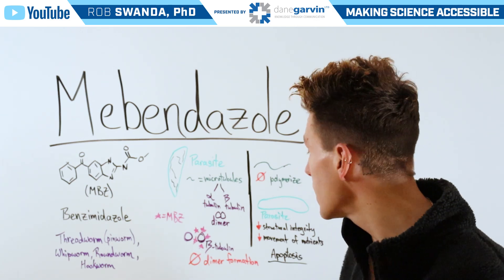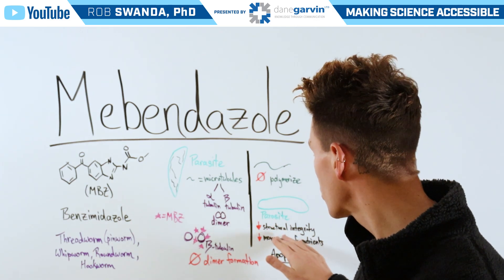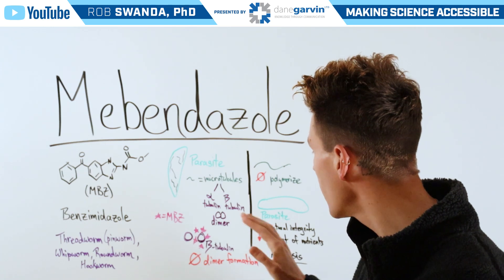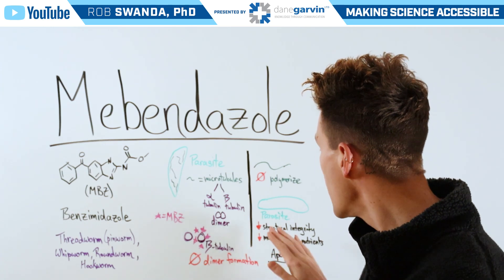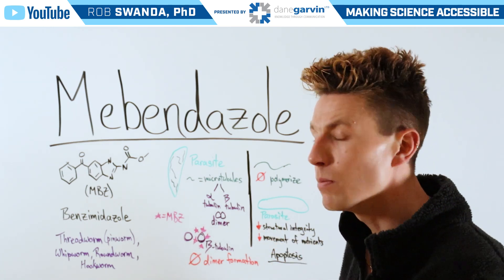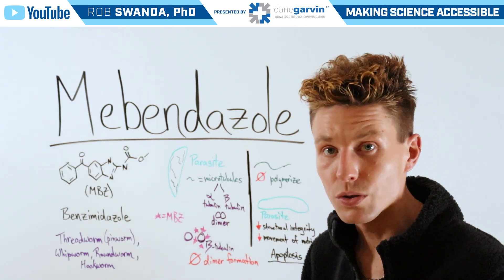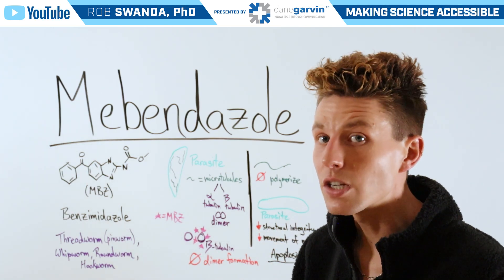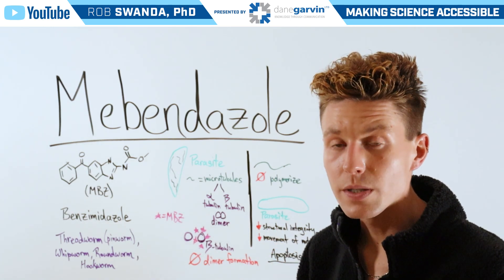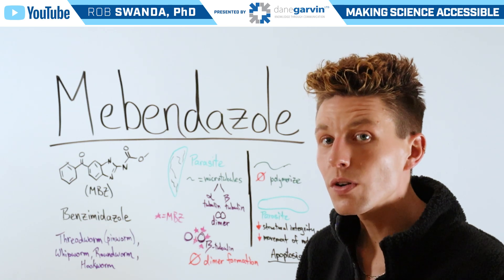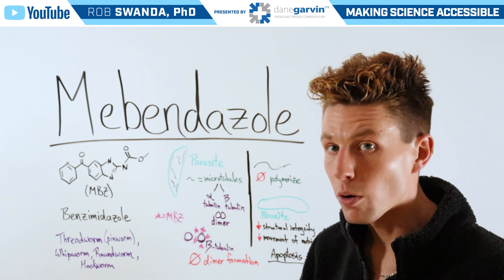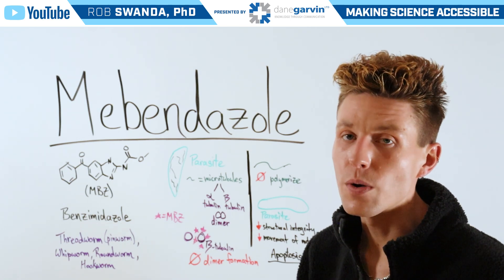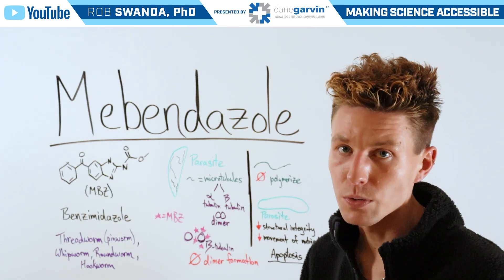We see decreased structural integrity of the parasite as well as decreased movement of critical nutrients such as glucose. This further leads to a form of cell death known as apoptosis.